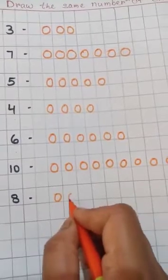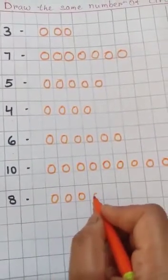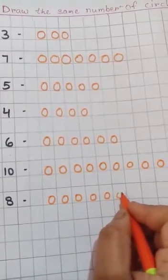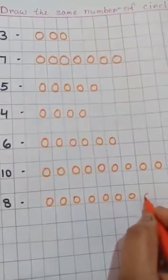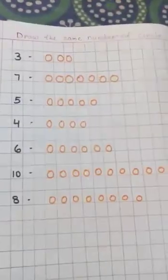1, 2, 3, 4, 5, 6, 7, 8. 8 circles. Understood?